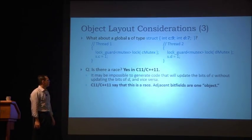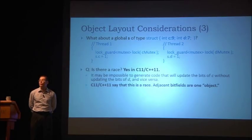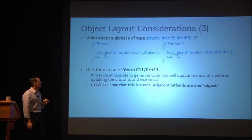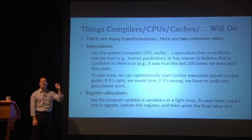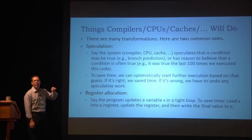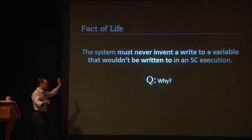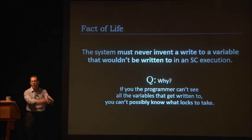The rule is: any object you can protect independently, and we guarantee that everywhere. Adjacent bit fields are one object, and this is the reason why — it may not be possible to do correct code generation otherwise. Compilers can invent writes all the time, but they must not invent a write to a variable that you would not have written to in a sequentially consistent execution. The system must never invent a write to a variable that wouldn't be written to in an SC execution, because you couldn't possibly know what locks to take.